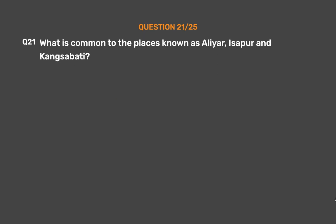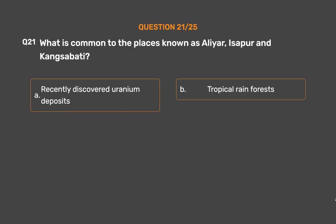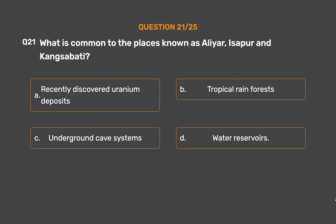Question No. 21: What is common to the places known as Aliyar, Isapur, and Kangsabati? Option A: Recently discovered uranium deposits. Option B: Tropical rainforests. Option C: Underground cave systems. Option D: Water Reservoirs.